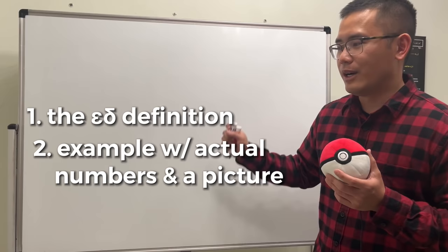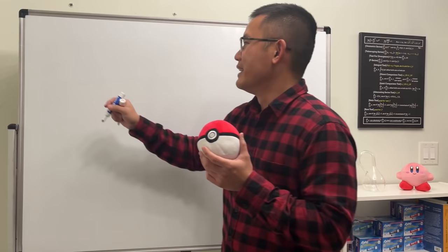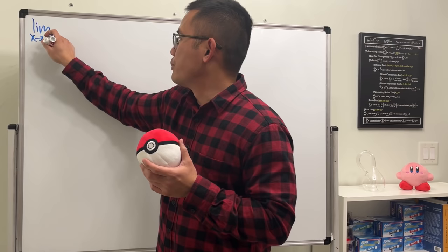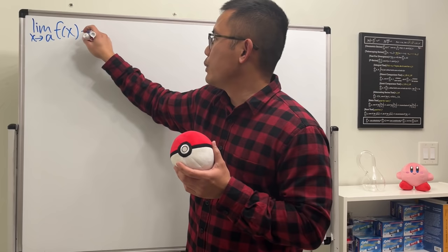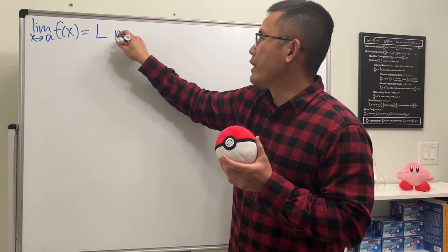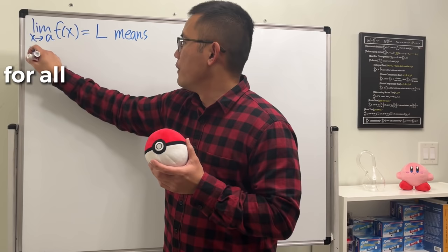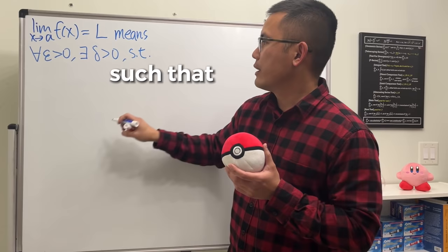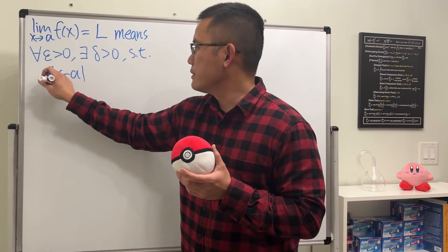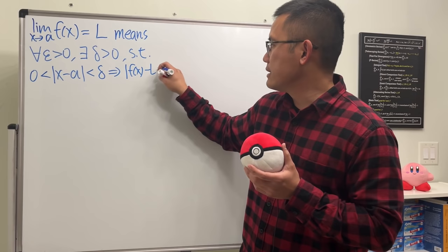Here is the definition: if we have the limit as x approaches some number a of a function f(x), and that limit equals L, then this means the following — for all epsilon greater than zero, there exists a delta greater than zero such that if the absolute value of x minus a is between zero and delta, then we must have the absolute value of f(x) minus L is less than epsilon.